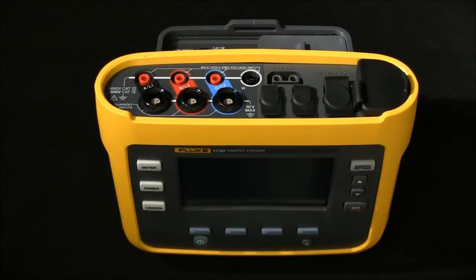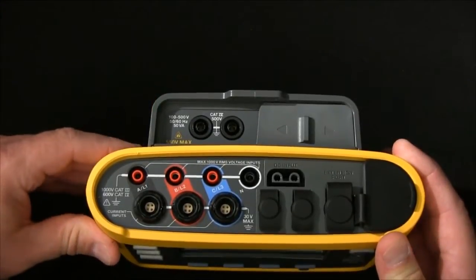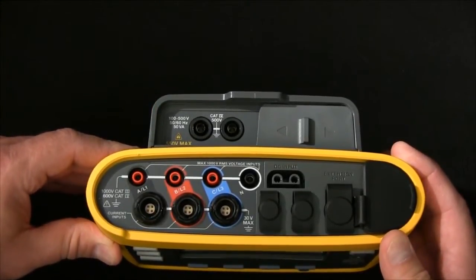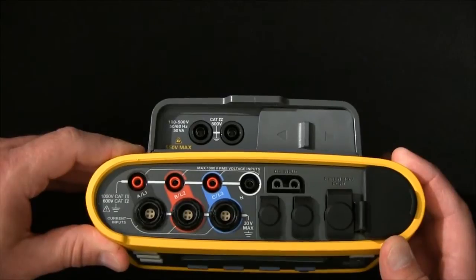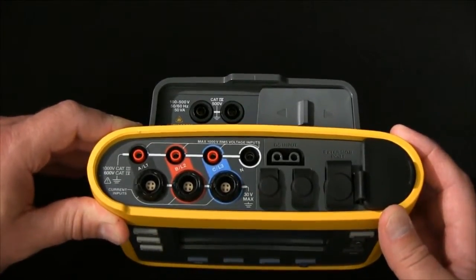The Fluke 1730 Energy Logger has the advantage that the power supply can actually be separated from the instrument to fit in tight locations where depth of the instrument is preventing it from being locked in the cabinet.